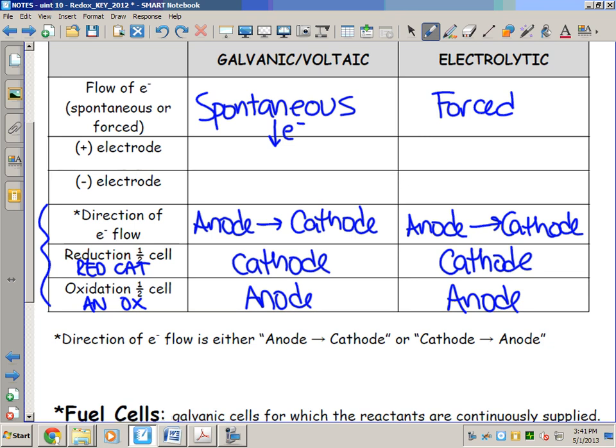Since electrons spontaneously flow to the cathode in a galvanic cell, that means it must be positive, because electrons are negative. If a negative particle is attracted to the cathode, the cathode must be positive. Since the electrons are forced to the cathode in an electrolytic cell, that means we are making the cathode negative.